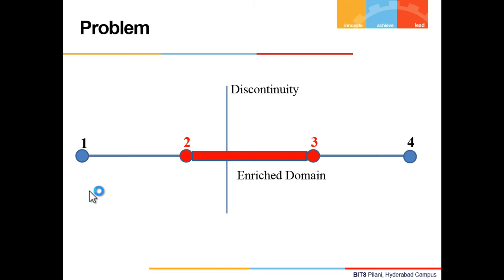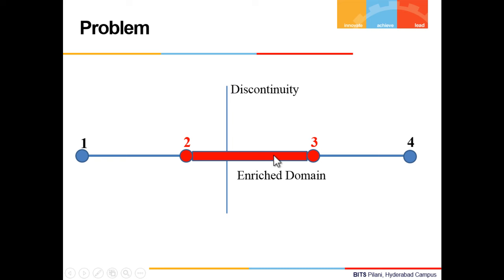Let us take a simple one-dimensional bar problem to understand how the various discontinuities work. The discontinuity is provided in between nodes 2 and 3, which are shown in red color as they are enriched.